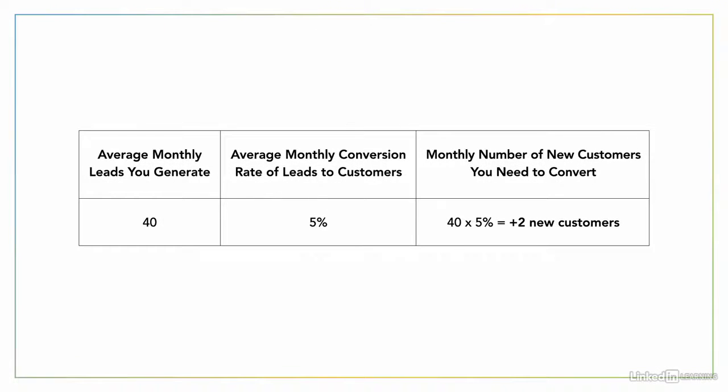One time, I asked the CEO of my company for next year's business objective so I could calculate how many new leads the sales force would need to generate. He didn't give me that information and just looked at me and said, 'You tell me how many new customers we can get.' If you're in this situation, don't worry. You can calculate the number of new leads you need without someone giving you a business objective. All you need to do is multiply the average number of leads you generate by your average conversion rate. Let's say that monthly, on average, you generate 40 new leads and convert 5% of those leads to new customers. Multiply 40 by 5%. Now you know that you need to convert, on average, two new customers per month.